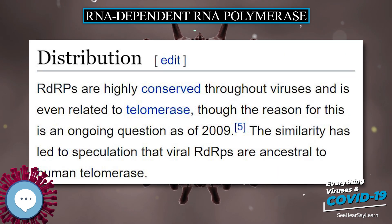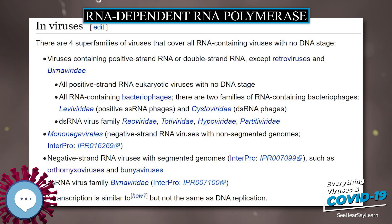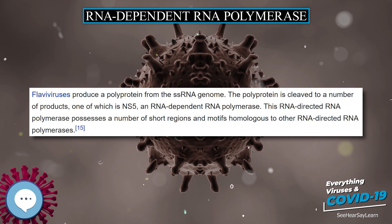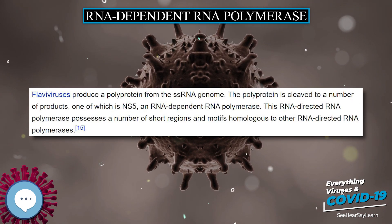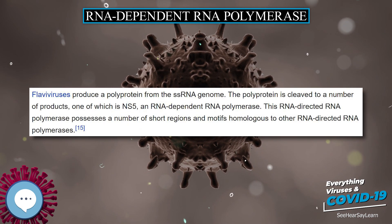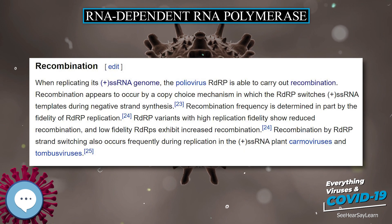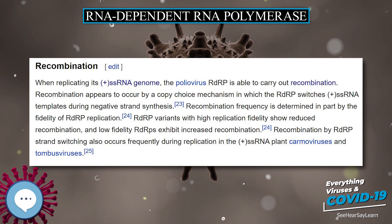Distribution: RDRPs are highly conserved throughout viruses and are even related to telomerase, though the reason for this is an ongoing question as of 2009. The similarity has led to speculation that viral RDRPs are ancestral to human telomerase.